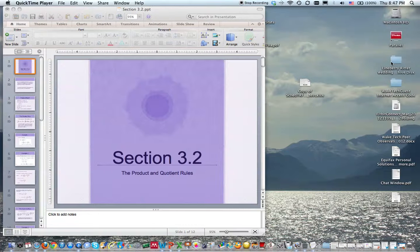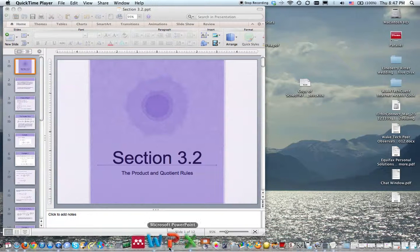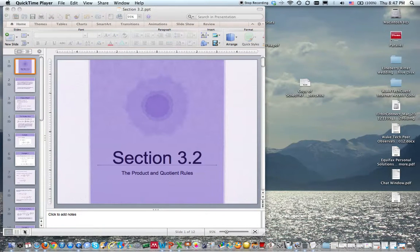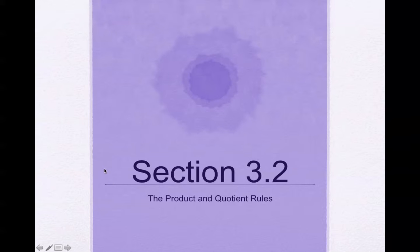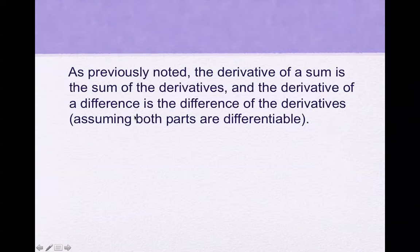Section 3.2, the product and quotient rules. In this section, I want you to remember that the derivative of a sum is the sum of the derivatives, and the derivative of a difference is the difference of the derivatives.